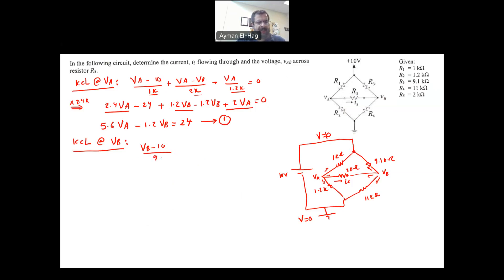So we will have here (VB - 10)/9.1kΩ plus (VB - VA)/2kΩ, which is this current, and finally the last current plus VB/11kΩ equal to zero. So the least common denominator, I will multiply everything times 100 kΩ. So we'll have here 11VB - 110 + 50VB - 50VA + 9.1VB = 0.